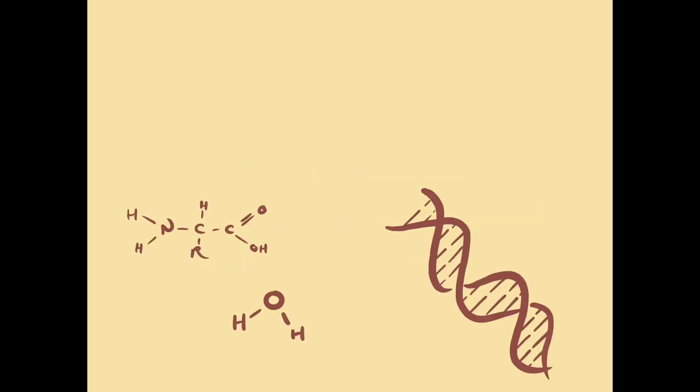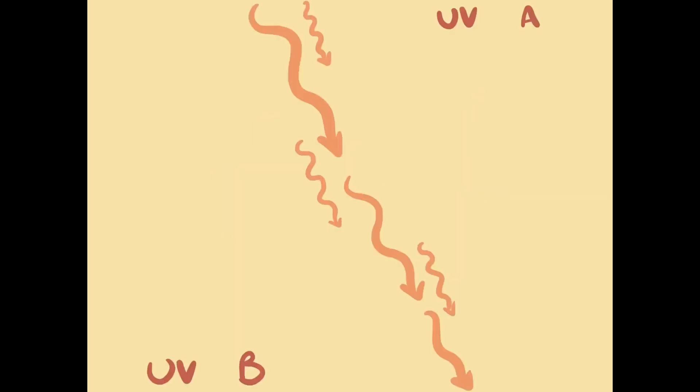This dark pigment is produced on demand by specialized cells deep within our skin in a process called melanogenesis, literally melanin creation. Melanin acts like a shield, reflecting UV radiation away from our DNA. When we talk about UV radiation, we're actually referring to two different waves: UVA, which has a longer wavelength, and UVB, which is less penetrating.